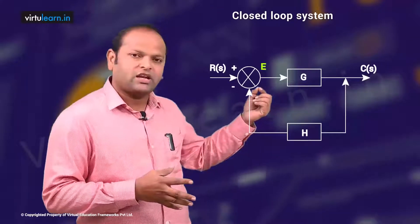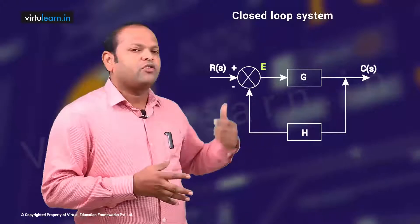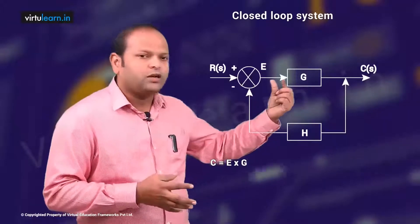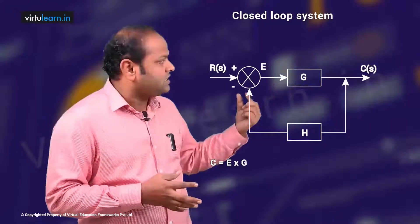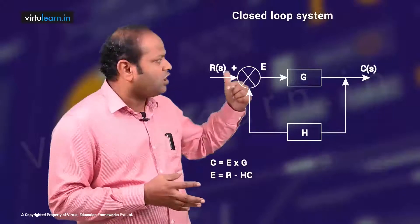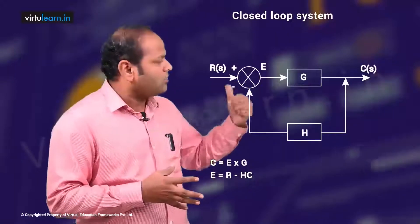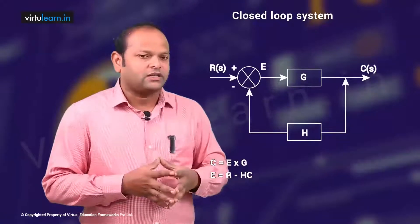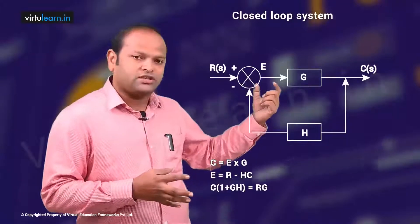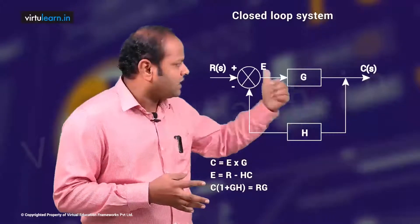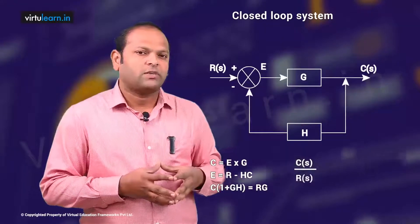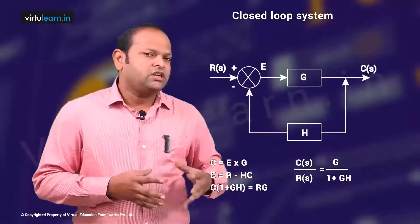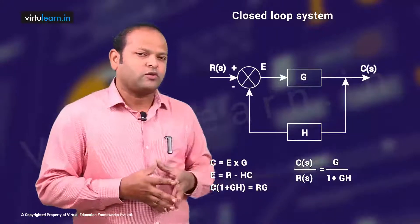We can write: C = E × G. What is E? E is nothing but R minus B, or R minus H × C. Substituting, we get C(1 + GH) = RG. We can find the transfer function C(s)/R(s), which gives us G/(1 + GH). So G/(1 + GH) is the transfer function of the closed loop system, or the gain of the closed loop system.